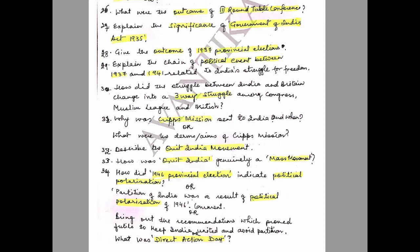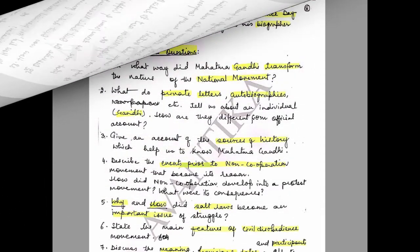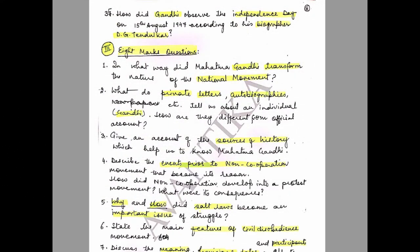This question can be asked as: 'Partition of India was a result of political polarization of 1946 — comment,' or 'What was Direct Action Day?' Question 35: How did Gandhi observe Independence Day on 15 August 1947, according to his biographer D.G. Tendulkar? This is the last question in the three-mark series.